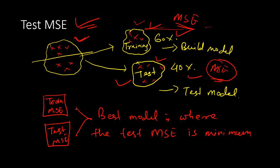Hence, every time you build a model, you measure the test mean square error and the best model is the one which keeps the minimum test mean square error. That's how you select a model. For example, if you are using a regression model.